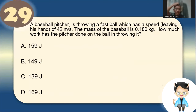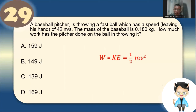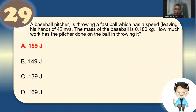Number 29: A baseball pitcher throws a fastball at 42 m/s; the baseball has a mass of 0.18 kg. How much work has the pitcher done? Using W = KE = ½mv²: ½ × 0.18 × 42² = 159 joules. The answer is letter A.